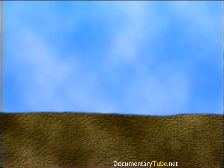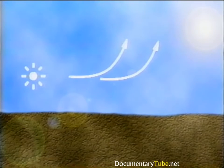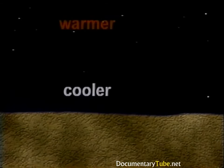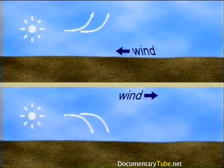Meteorological conditions also affect the direct propagation path, including vertical temperature and wind gradients. During daytime, solar radiation heats the ground; air nearest the ground is warmest, becoming progressively cooler with height — a temperature lapse. Since the speed of sound increases with temperature, sound rays bend upward away from the earth, decreasing the noise level at the receiver. At night, the ground cools faster than the atmosphere, causing temperature to increase with height — a temperature inversion — and sound rays to bend downward, increasing the noise level at the receiver.